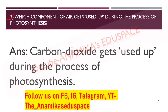Question number three: which component of air gets used up during the process of photosynthesis? The component which gets used up is carbon dioxide, known as CO2. The answer is: carbon dioxide gets used up during the process of photosynthesis.